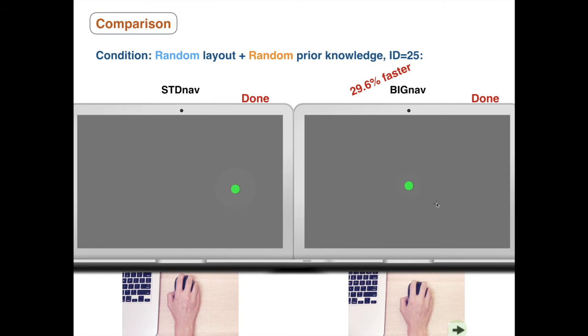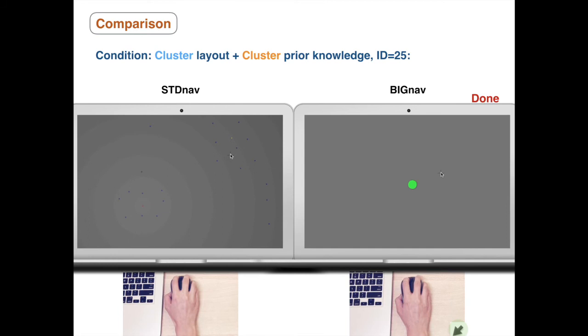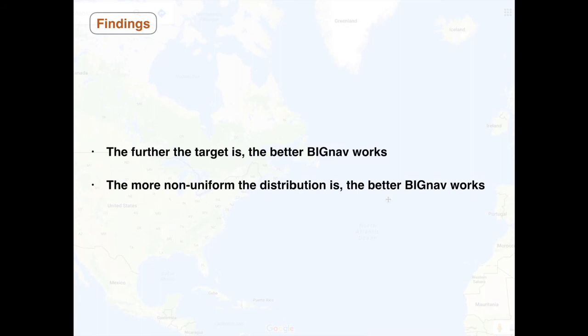In addition, when targets are clustered, which is more realistic, Big Nav is closer to 40% faster. Overall, the results show that Big Nav is significantly faster than standard navigation and requires fewer commands for distant targets, especially in non-uniform information spaces.